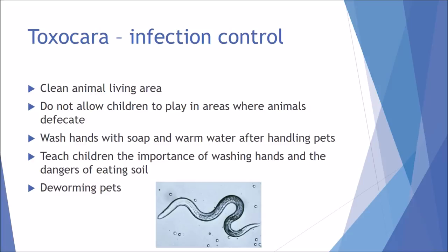Fortunately, Toxocara is completely preventable and is a useful infection control example. Preventative measures include cleaning and bleaching animal living areas to remove faecal matter, teaching children not to play in areas where animals defecate, washing hands with soap and warm water after handling pets — including under the nails where eggs can embed — and teaching children good hand hygiene. Routinely deworming pets ensures they remain worm-free and cannot contaminate their surroundings.